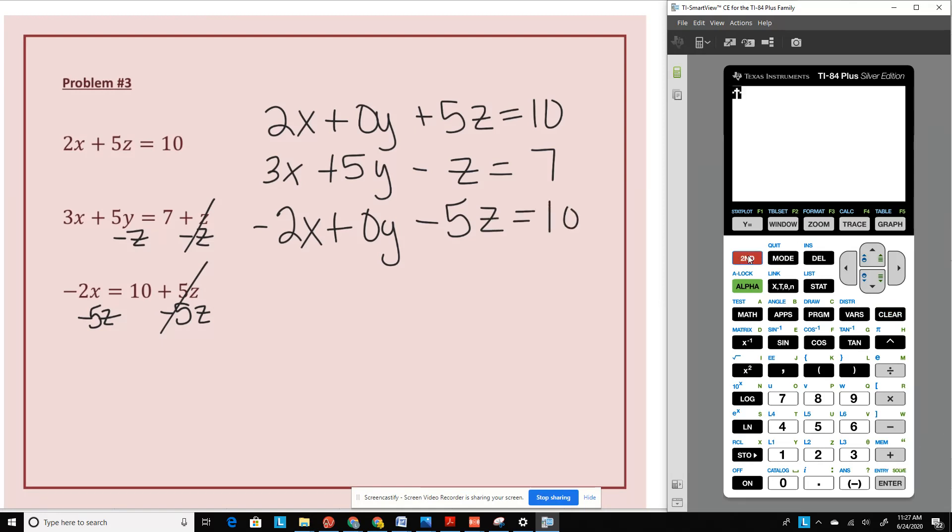So using your calculator, we are going to go to second matrix. We're going to go back to edit. And we're going to do a 3 by 4 again. So we're going to put our coefficients. The last row, negative 2, 0, negative 5, and 10. So again, don't forget to put your 0s where they go. We have saved this matrix. So we're going to go to second quit to go back to the calculator.